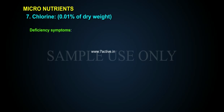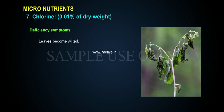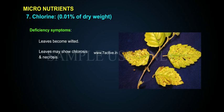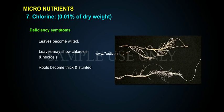Deficiency symptoms of chlorine include wilting of leaves, chlorosis and necrosis of leaves, and roots becoming thick and stunted.